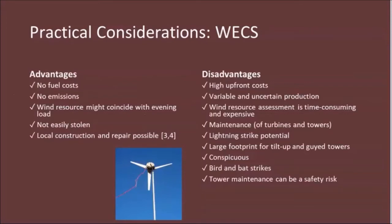To recap wind for off-grid systems: we like wind because there's no fuel cost, no emissions, it's possible to be windy in the evening when load is heaviest, it's hard to steal, and it's actually possible to construct a wind turbine using local materials. Disadvantages include a relatively high upfront cost — particularly as solar prices decrease — difficulty assessing the wind resource ahead of time requiring on-site measurements, conspicuousness that may draw unwanted attention, potential bird or bat strikes, and towers requiring maintenance and posing safety risks.